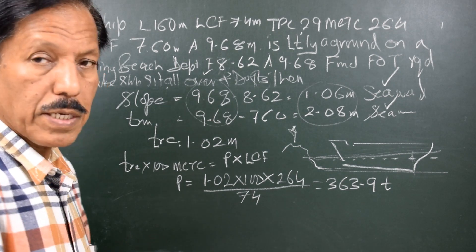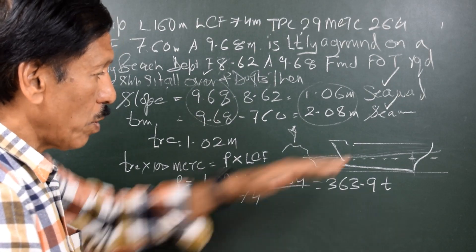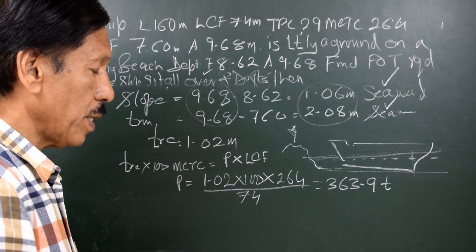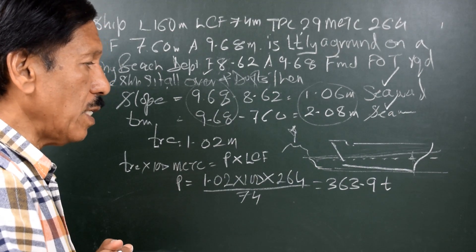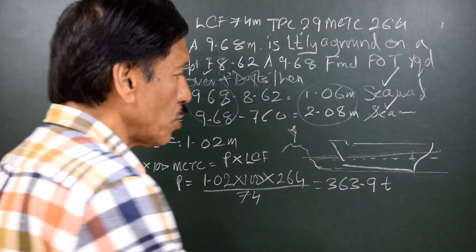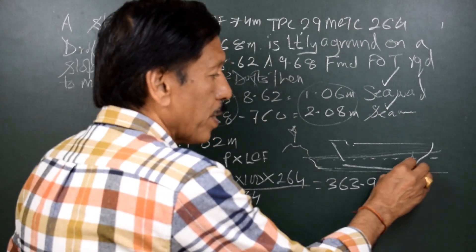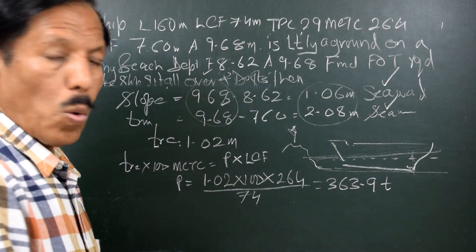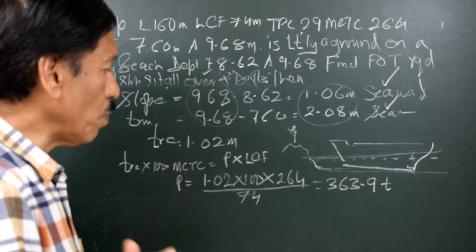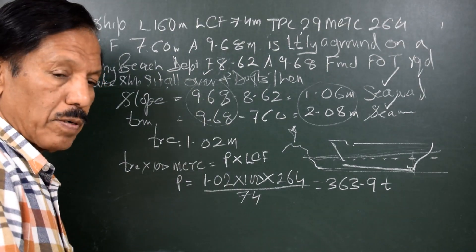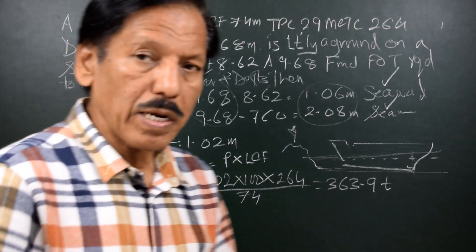363.9 tons is the upthrust with the fall of water level. We want to find out what is the fall of water level. Now, 363.9 tons as if it is discharged from a point that is touching the seabed, as if we are going to remove this much weight from the ship. So when we remove this much weight from the ship, two things happen.